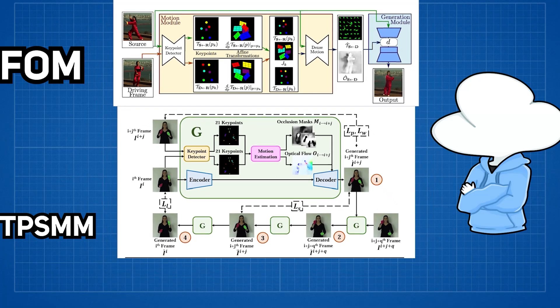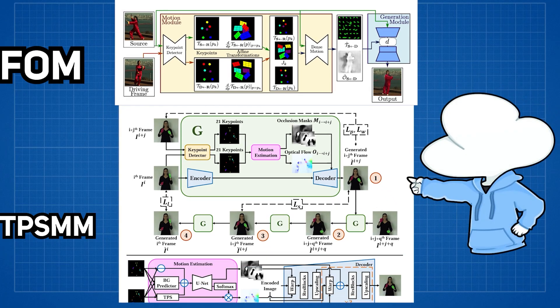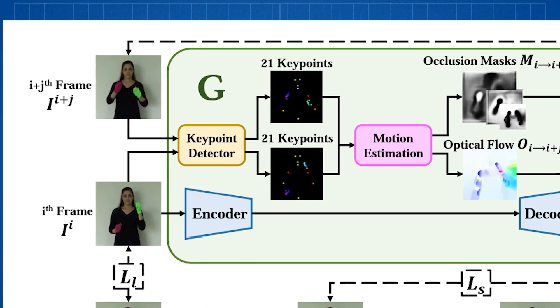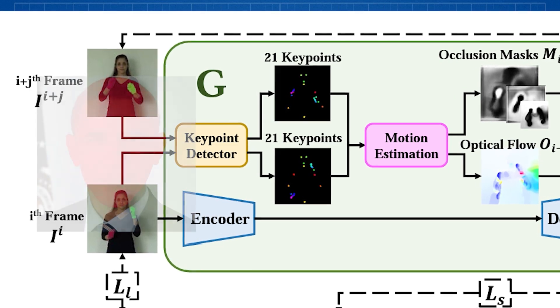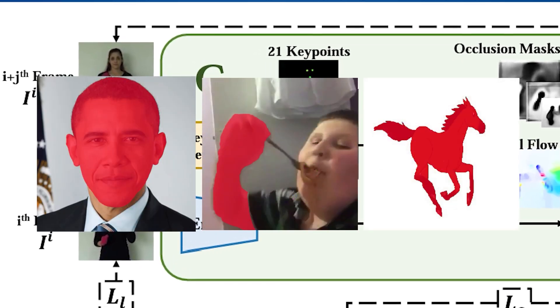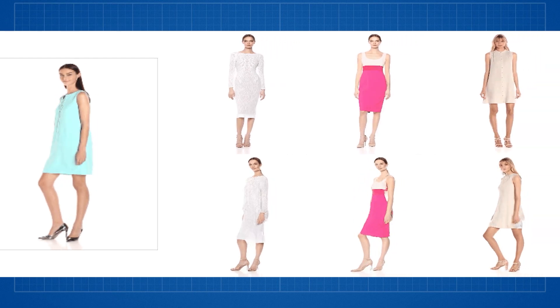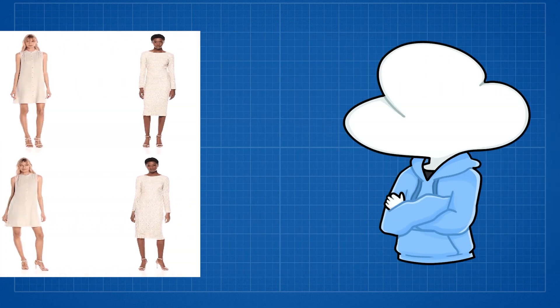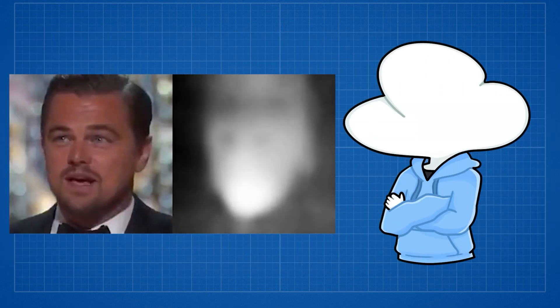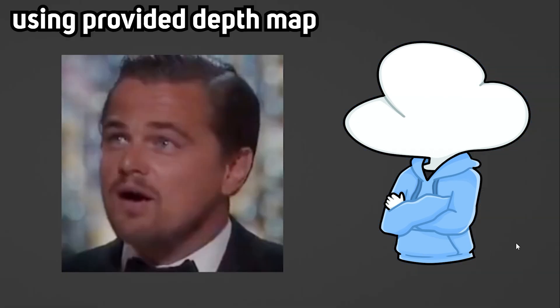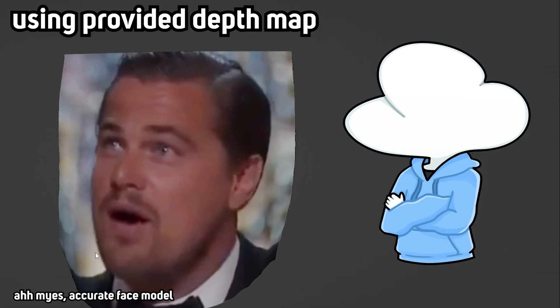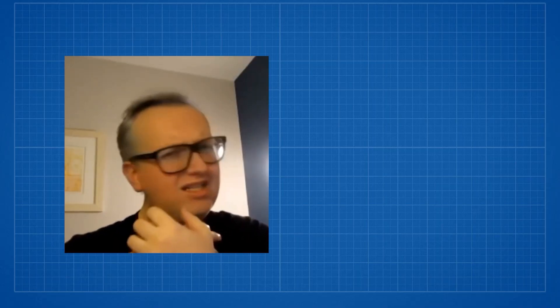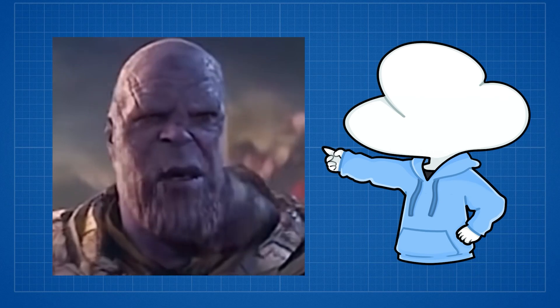What is different, however, is that TPSMM also takes good care of inpainting the background, which is a major problem in FOM. The use of a keypoint detector allows multiple domains such as faces, body, and even cartoon animals to be easily animatable with a driving video. However, things like faces that need very high 3D coherency would be very difficult to execute, or easy to notice some faults, since the driving video has a lot of drastic motions, and you can see the problem in the resulting animation.